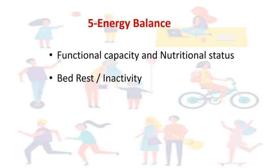Dietary assessment methods and anthropometric methods will be discussed in more detail in future videos, as these are the most commonly used methods in social sciences. The fifth method is energy balance, which examines functional capacity, nutritional status, and bed rest or inactivity. Nutritionists focus on this method when making dietary plans; however, in social science studies there is no specific use of this method — it is more important at the clinical or individual level.